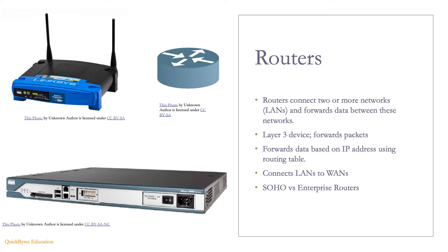These packets are forwarded based on the IP address of the destination device. Routers use routing tables that list various networks and which route the data should take to reach that network. This is done at each router until the packet reaches its final destination. Routers also connect LANs to WANs.